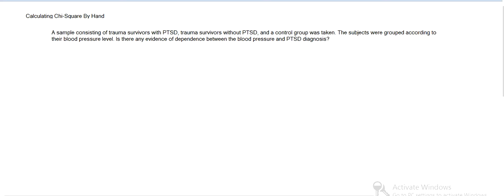So we've got a question with three groups: trauma survivors with PTSD, without, and then a control group. And then they're being grouped according to their blood pressure to see if there is any dependence between the two.